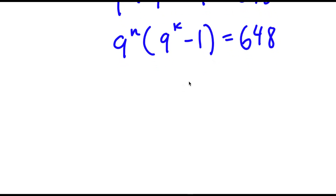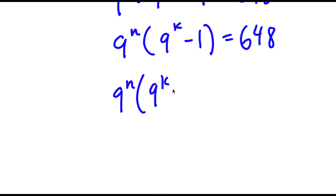And 648 I can rewrite as 81 times 8. So now I have 9 to the power of n times the quantity 9 to the power of k minus 1 is equal to 81 times 8.